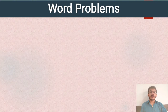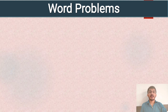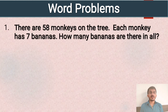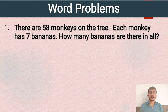Next topic is word problems, which are a very important part of mathematics. Today we will learn how to solve word problems of multiplication through examples. First example: there are 58 monkeys on the tree, each monkey has 7 bananas — how many bananas are there in all? We need to find the total number of bananas. We write the answer in statement form.